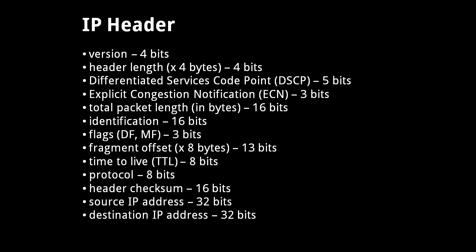After the header checksum, we have the source and destination IP addresses — no real explanation needed. Finally, if the header length field value is greater than 5, an IP header may end with some extra bytes that specify extra options. In practice, however, options are very rarely used.